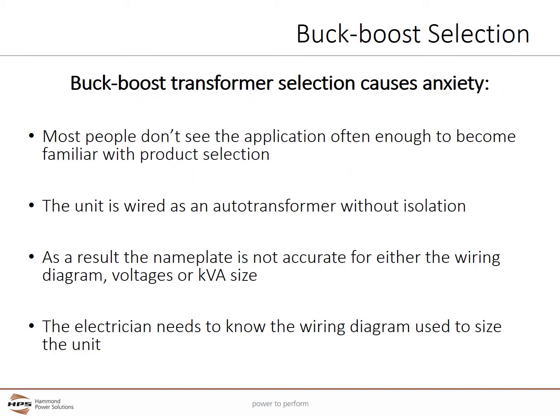Buck boost transformer selection has a tendency to cause anxiety for several reasons. Most people don't see the application often enough to become familiar with the product selection. The unit is wired as an auto transformer without isolation, which means the nameplate is not accurate for either the wiring diagram voltages or kVA size — and everyone is taught to review and obey the nameplate. Finally, the electrician needs to know the wiring diagram that was used to size the unit, and they need to wire the unit exactly as the buck boost wiring diagram states.